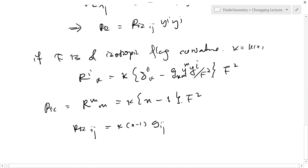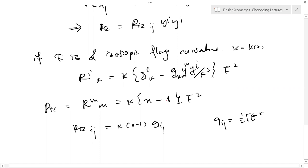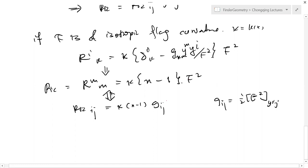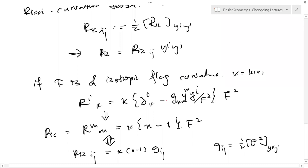This also implies Ricci_ij equals K times (n−1) g_ij, because g_ij is going to be half of the Hessian. These two are equivalent. In Finsler geometry, we're still dealing with some basic fundamental problems — what are the reasonable Ricci curvature and scalar curvature. Everybody accepts this Ricci curvature scalar, not the Ricci curvature tensor.